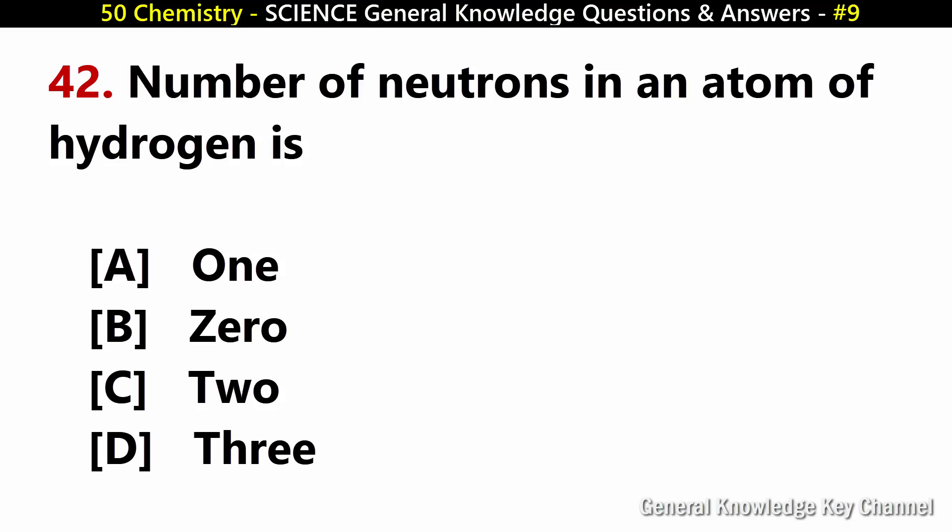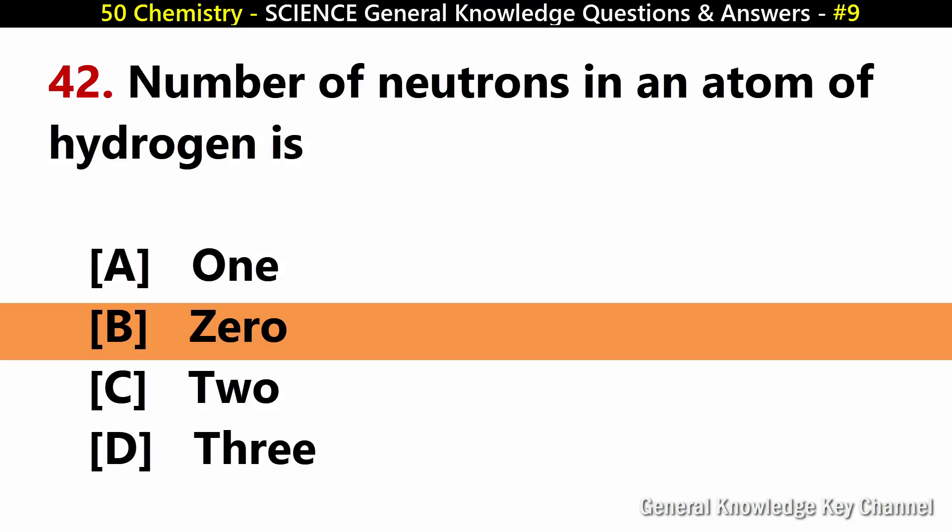Number of neutrons in an atom of hydrogen is? Answer B: Zero.